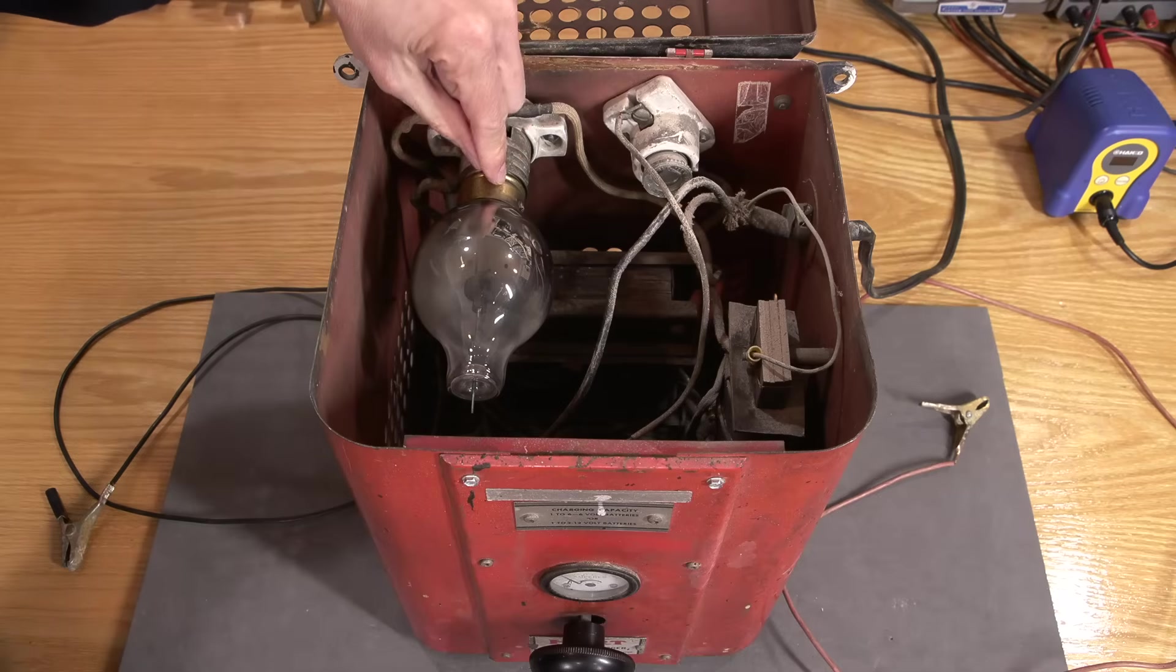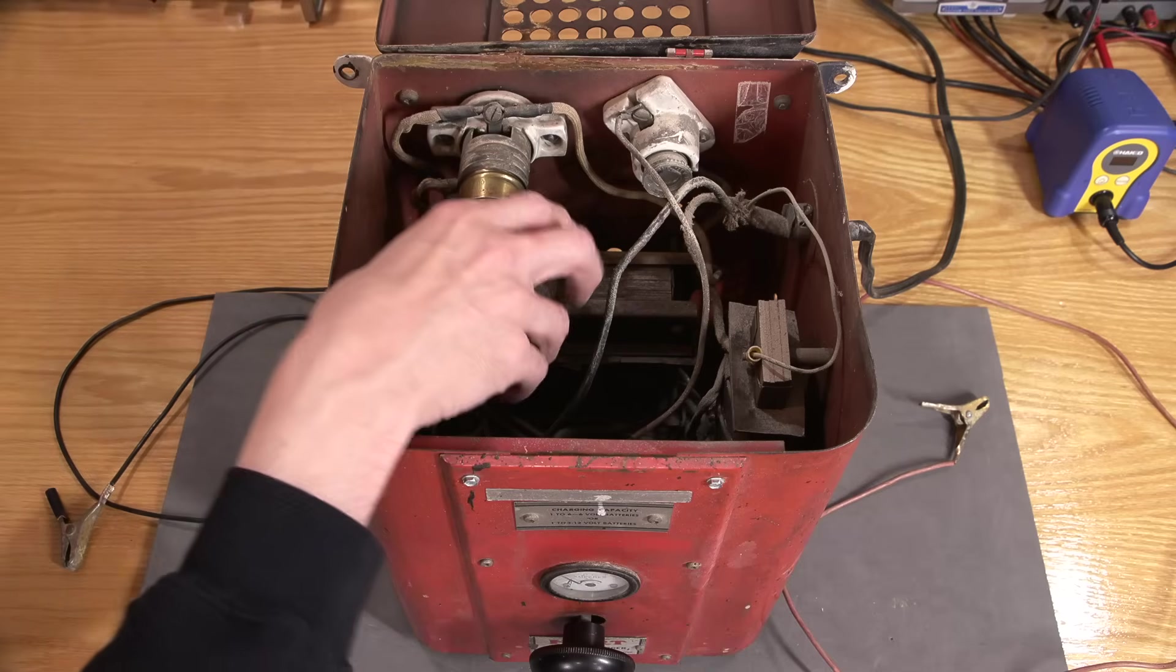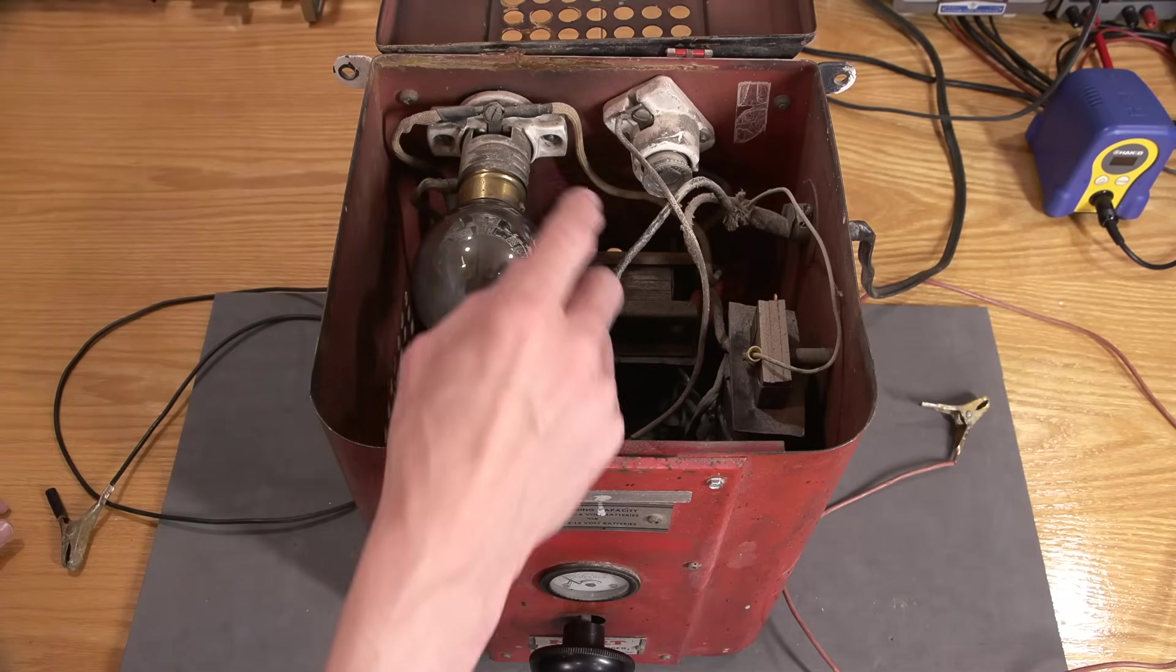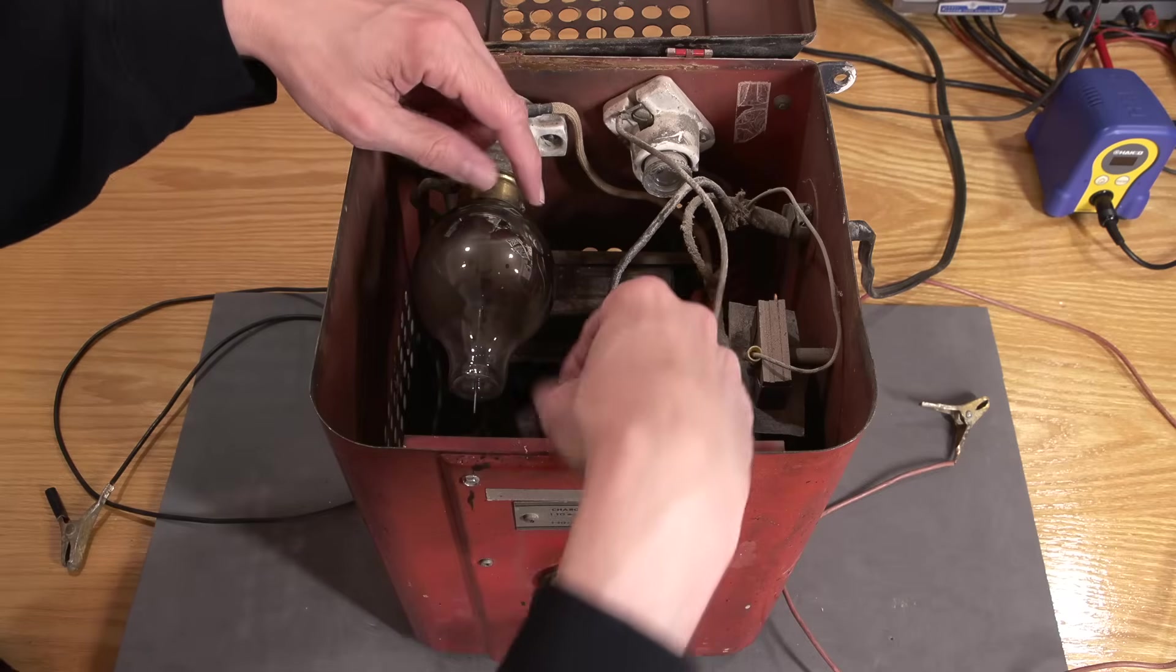So a lot of the times the numbering system is etched into the more expensive, especially tubes that were JAN type tubes. So JAN stands for Joint Army and Navy. A lot of the times the numbering system is etched in, and sometimes they'll even use a printing system as well. But a lot of the times it's just etched right into the glass.